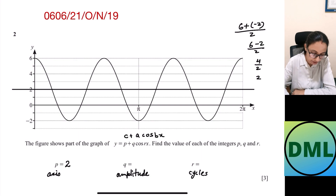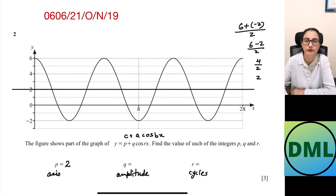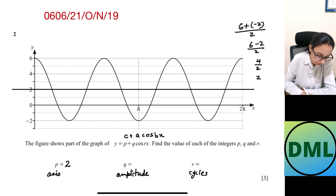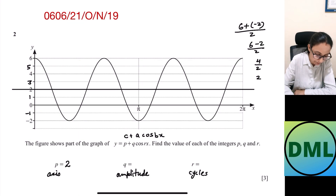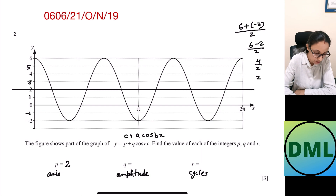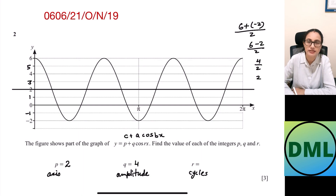Now I need to find out the amplitude — how many units it is going above the axis and how many units it is going below the axis. The axis is at 2, the maximum is 6, so it goes 4 units above the axis and 4 units below the axis. So our amplitude is 4, meaning the value for q is 4.